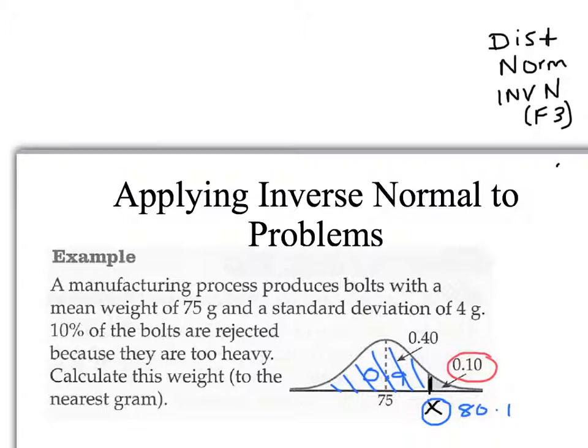Before, when we were using the normal curve, we were finding what the shaded area was. Now with an inverse, we reverse that — we're given the shaded area and we're looking for the value at the bottom of the graph: what's the weight, or what's the length, at that percentage?